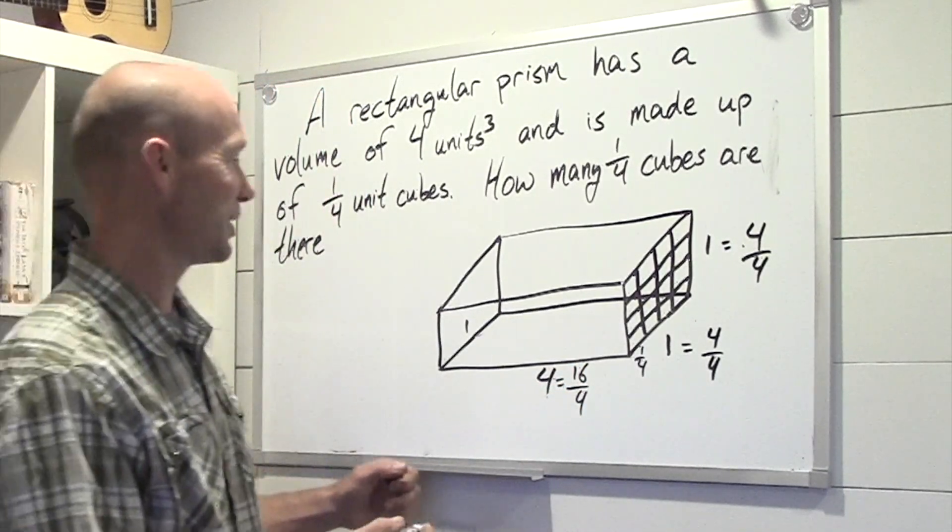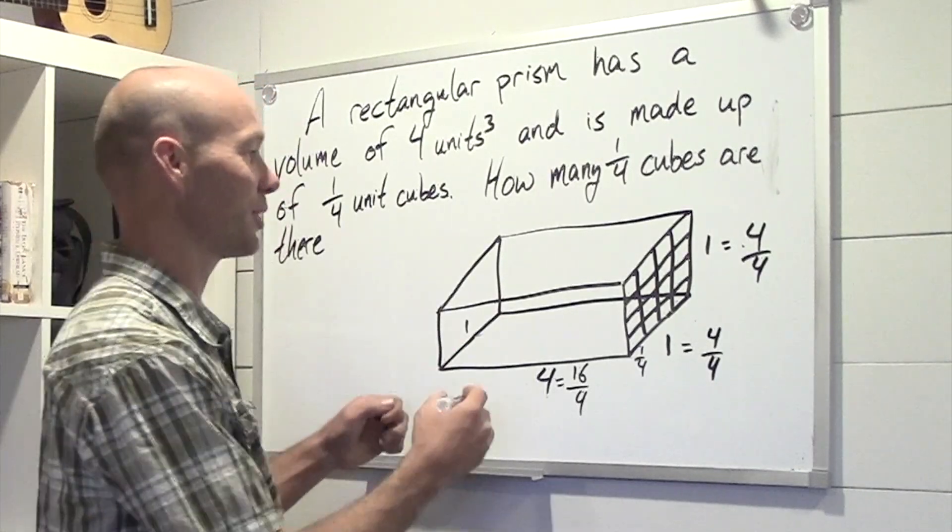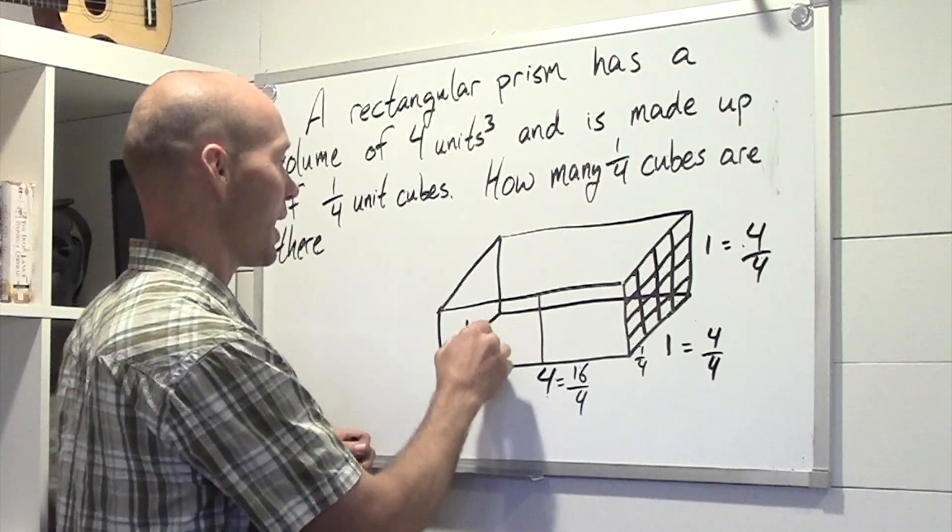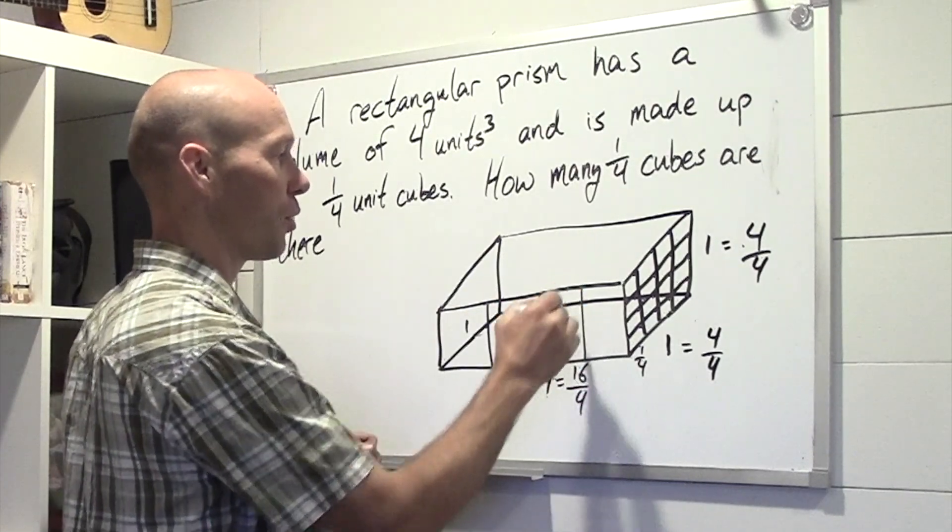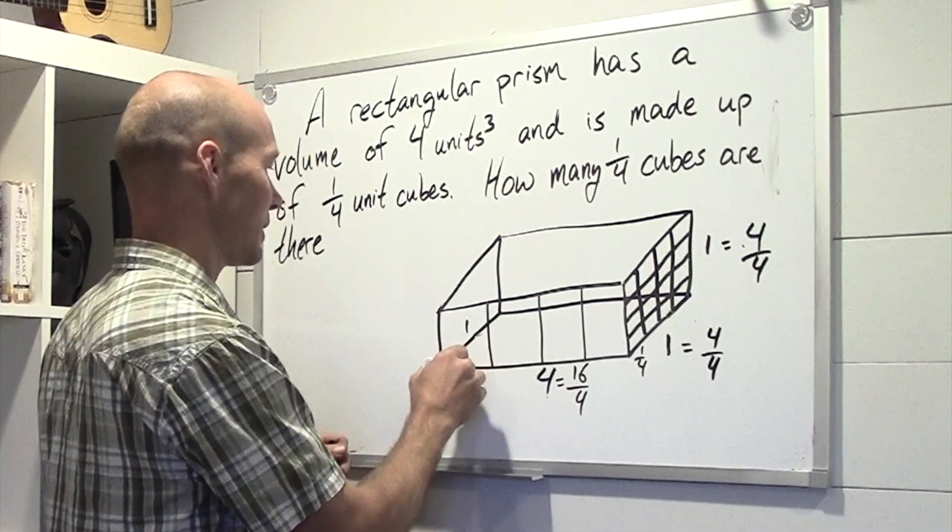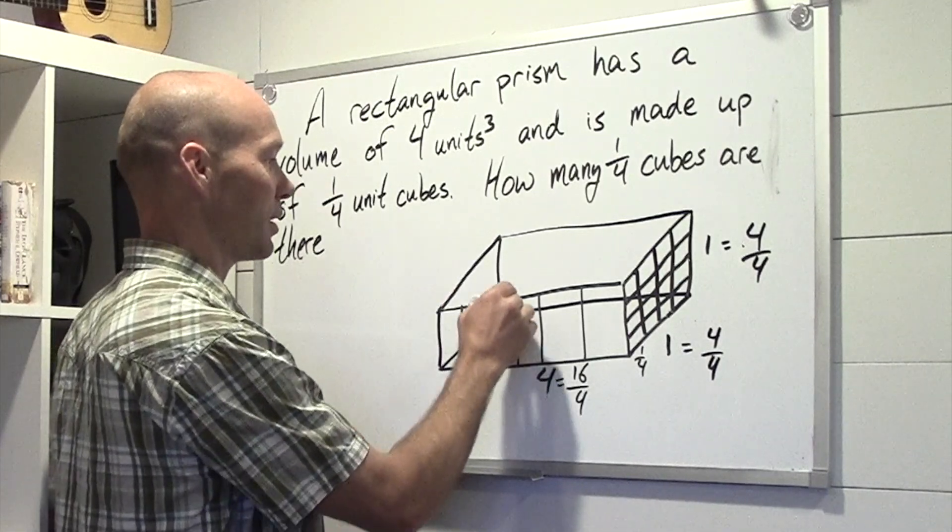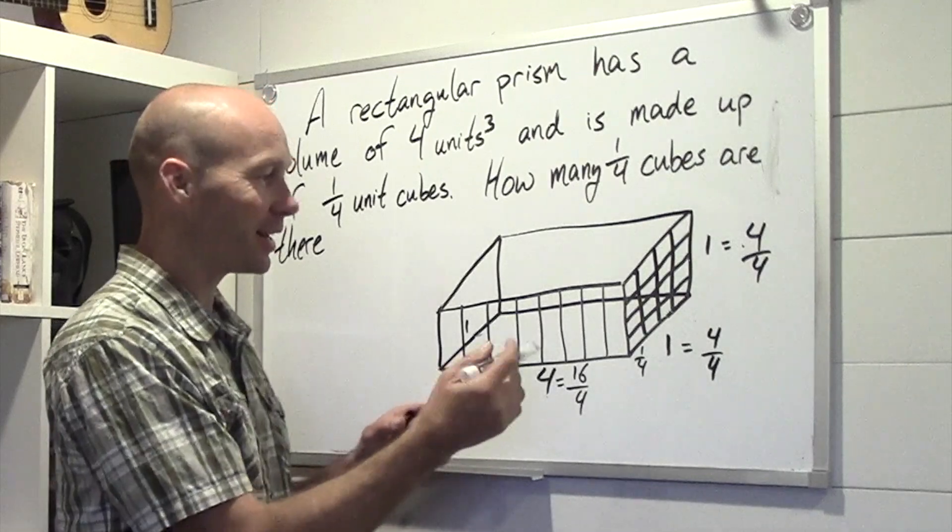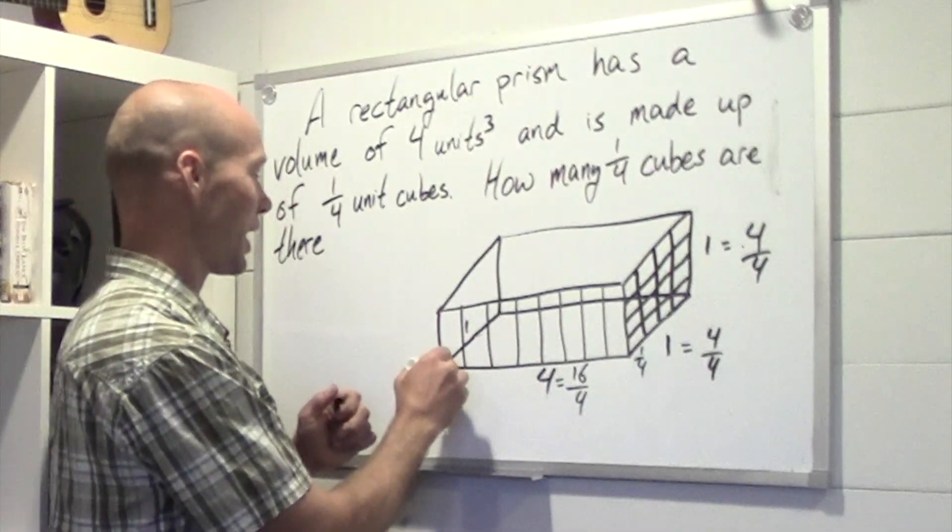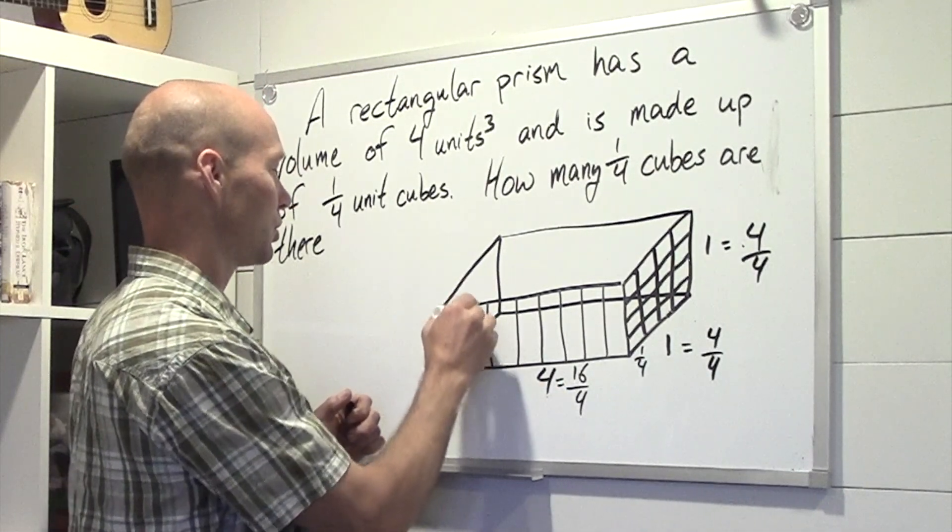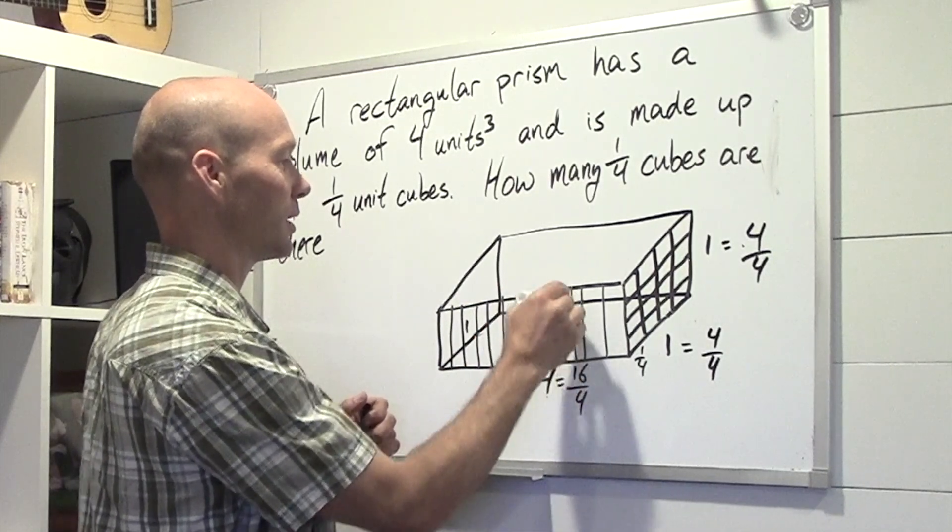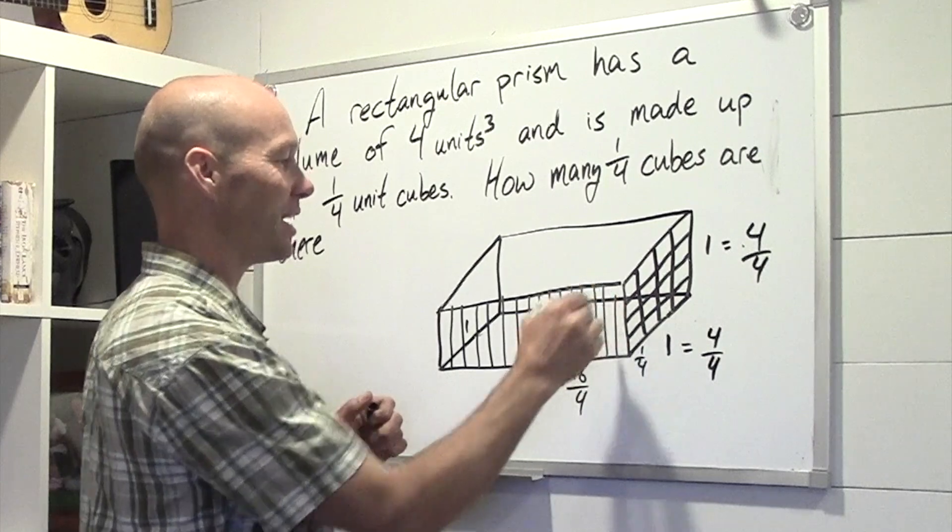Right? 16/4ths. So we would have to split this up into half, into half again, which gives us 4, into half again, which gives us 8. And then each of these 8 we split in half again. 1, 2, 3, 4, 5, 6, 7, 8,